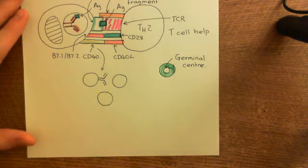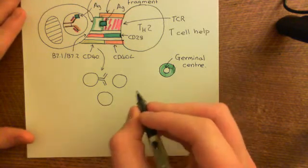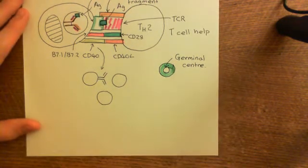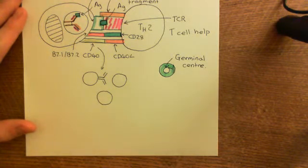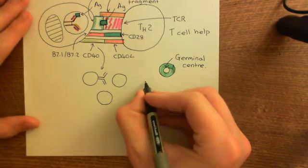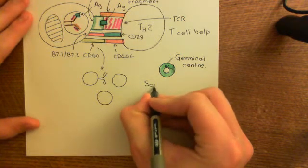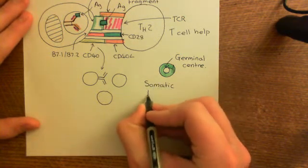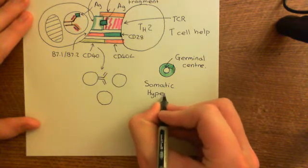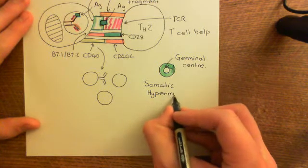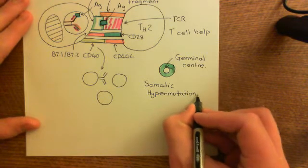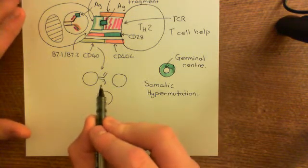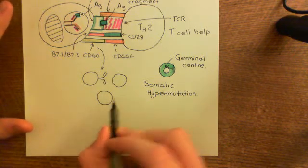We want to try to get the affinity as optimal as it could possibly be. So we are going to start up a process of natural selection. For natural selection, you have to have variation within the population, and what you are going to do is a process known as somatic hypermutation. Every single one of the B-cells produced from this original B-cell will make tiny little mutations to their B-cell receptors so that all of them have different B-cell receptors.